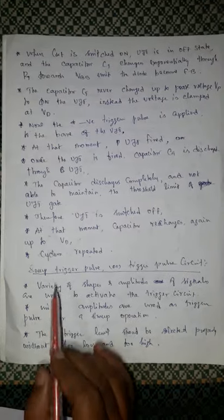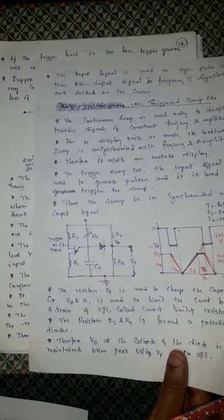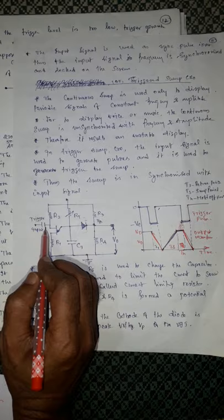For the next topic: sweep trigger pulse or trigger pulse circuit. Previously we studied about the trigger CRO, where we give a trigger input signal. Now we are going to study how this trigger input will be generated — that is the topic here.